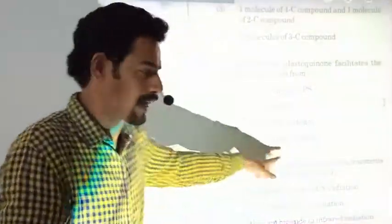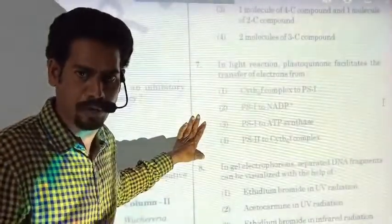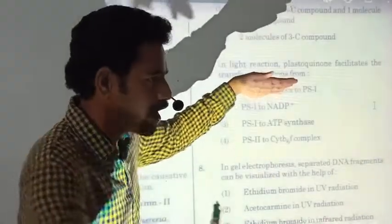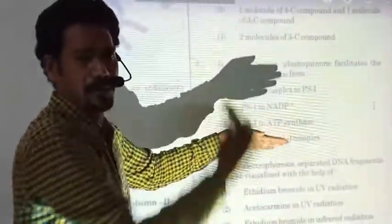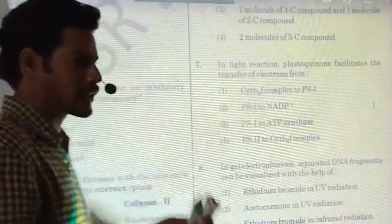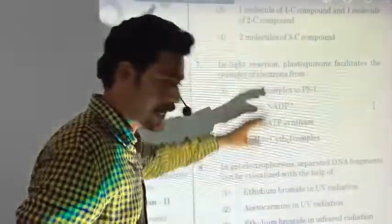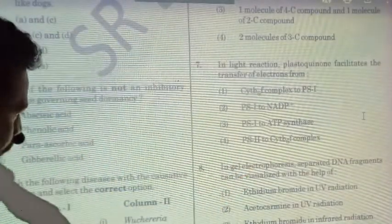The ultimate electron donor during non-cyclic electron transport is the water molecule. The ultimate proton donor is also water. The direction of electron movement is horizontal, while proton translocation is vertical — both in a perpendicular way. Electrons from photosystem II pass through QA, QB, and then cytochrome b. The answer here is between those two: plastoquinone.